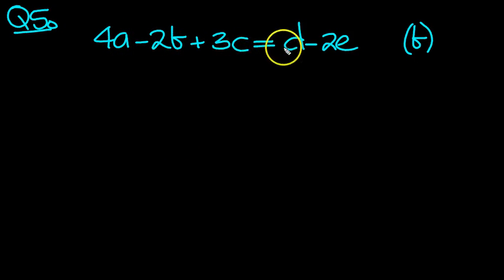4A minus 2B plus 3C equals D minus 2E. And we want to solve this equation for B. Here are the B's, but it's a minus 2B.